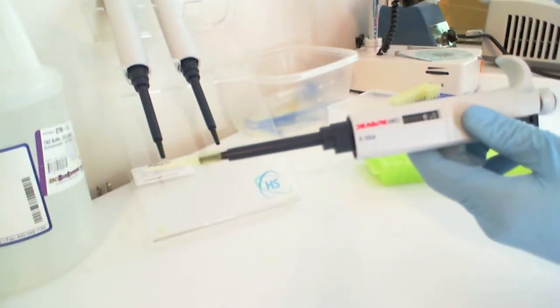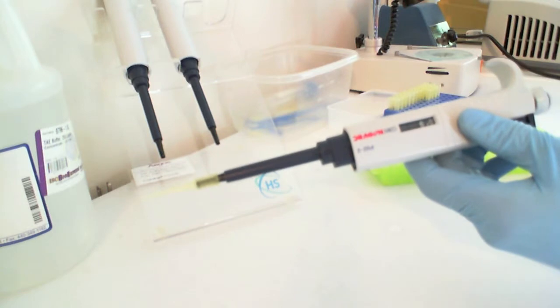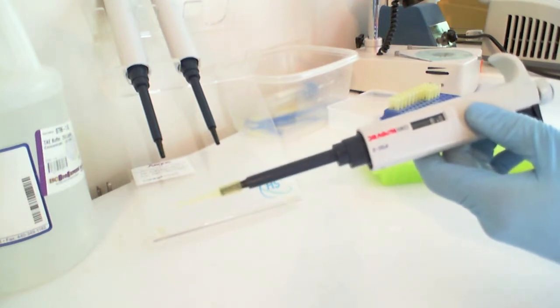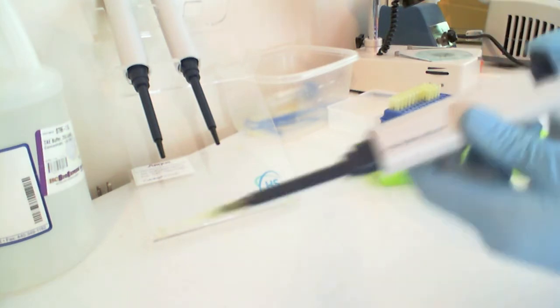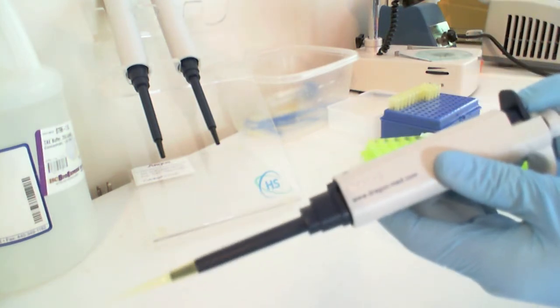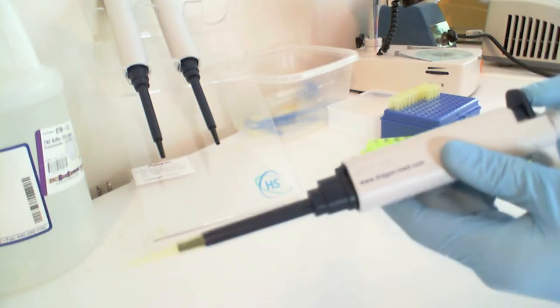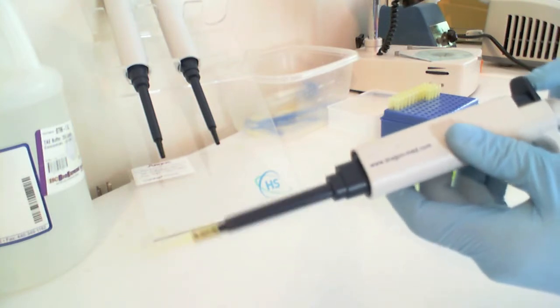When you're done using one reagent, you'll need to eject the disposable tip on the end of your pipette and replace it with a new one. Tips are ejected by pressing this button at the back end of the pipette, which moves a barrel down, pushing the tip off the end.